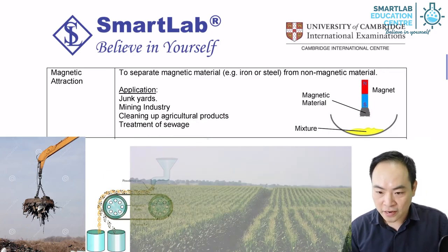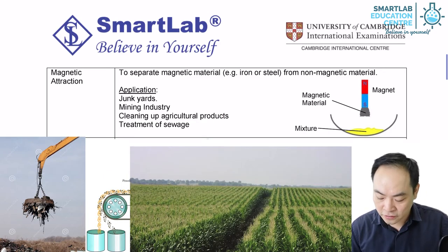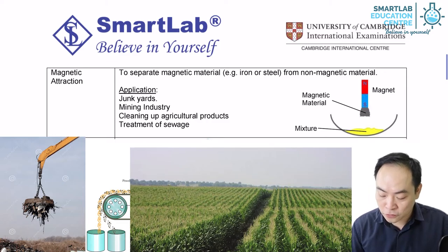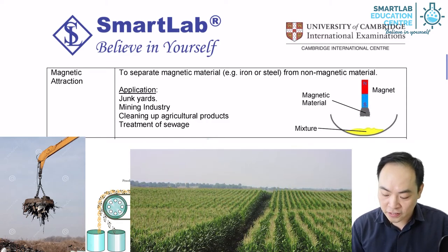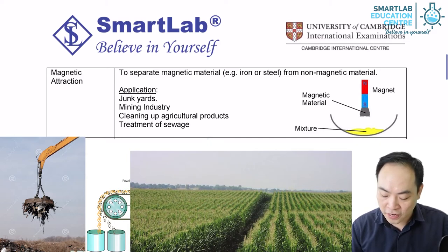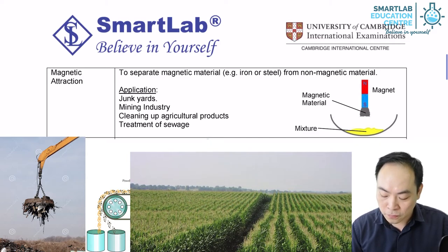In agriculture, magnets are used to eliminate hard water and to keep useful minerals to allow plants to grow more healthily.